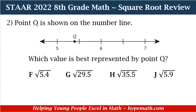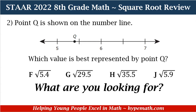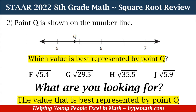Point Q is shown on the number line. Which value is best represented by point Q? Is it F, the square root of 5.4? G, the square root of 29.5? H, the square root of 35.5? Or J, the square root of 5.9? Our first question we always need to ask ourselves is: what are we looking for? We are looking for the value that is best represented by point Q.